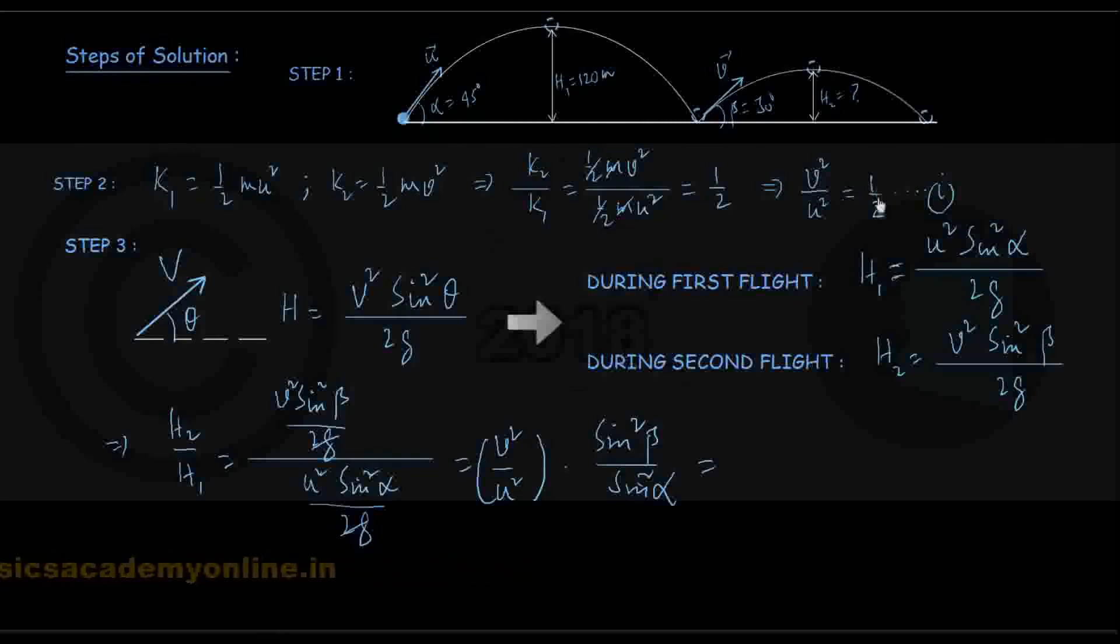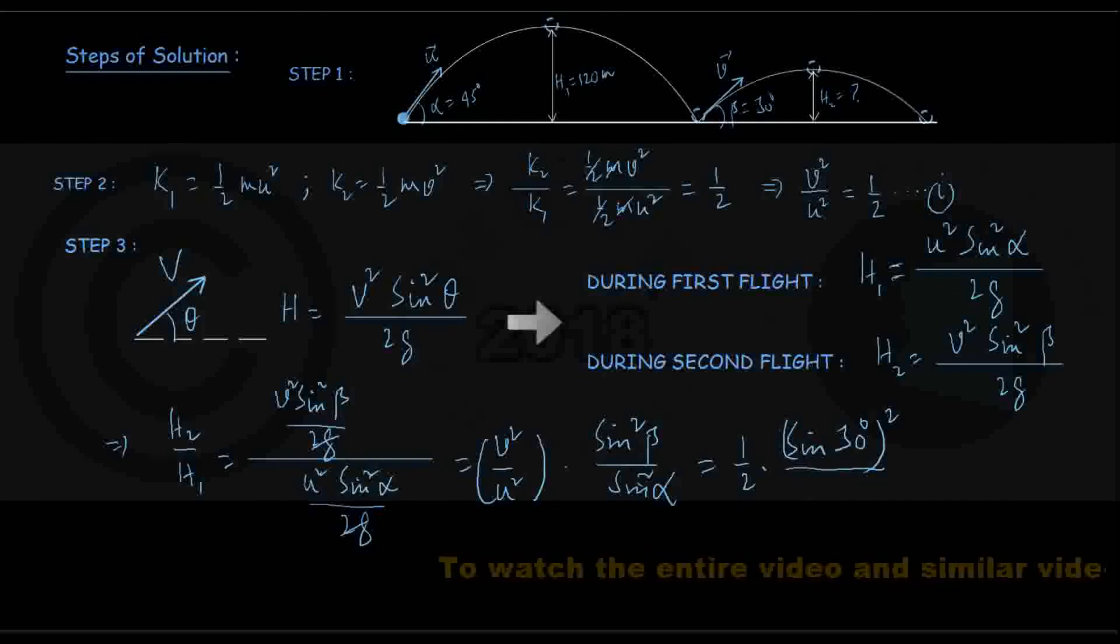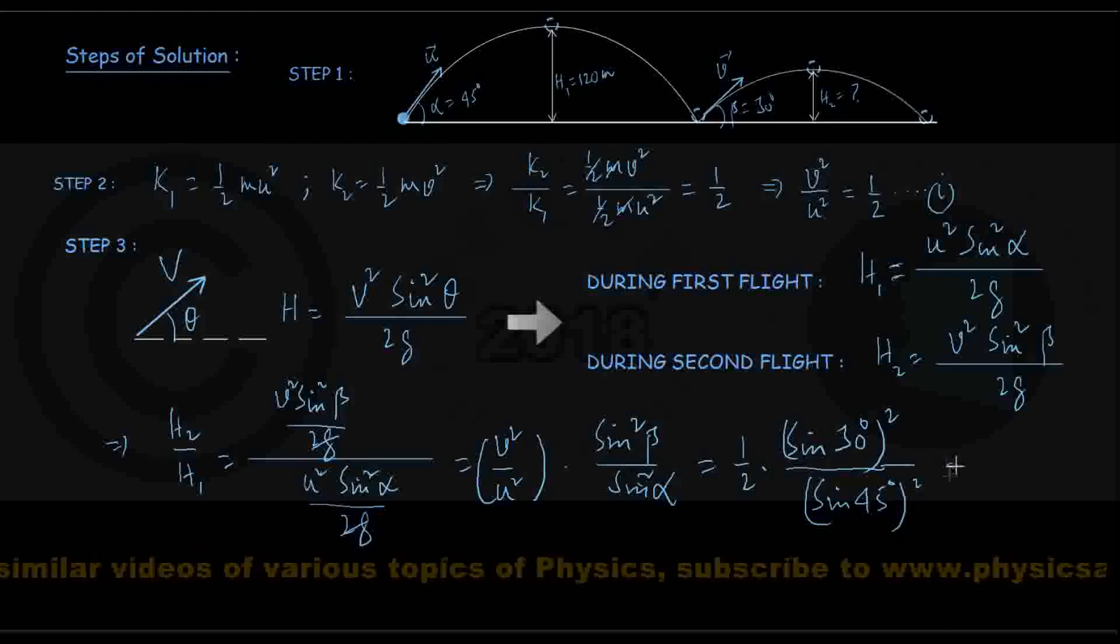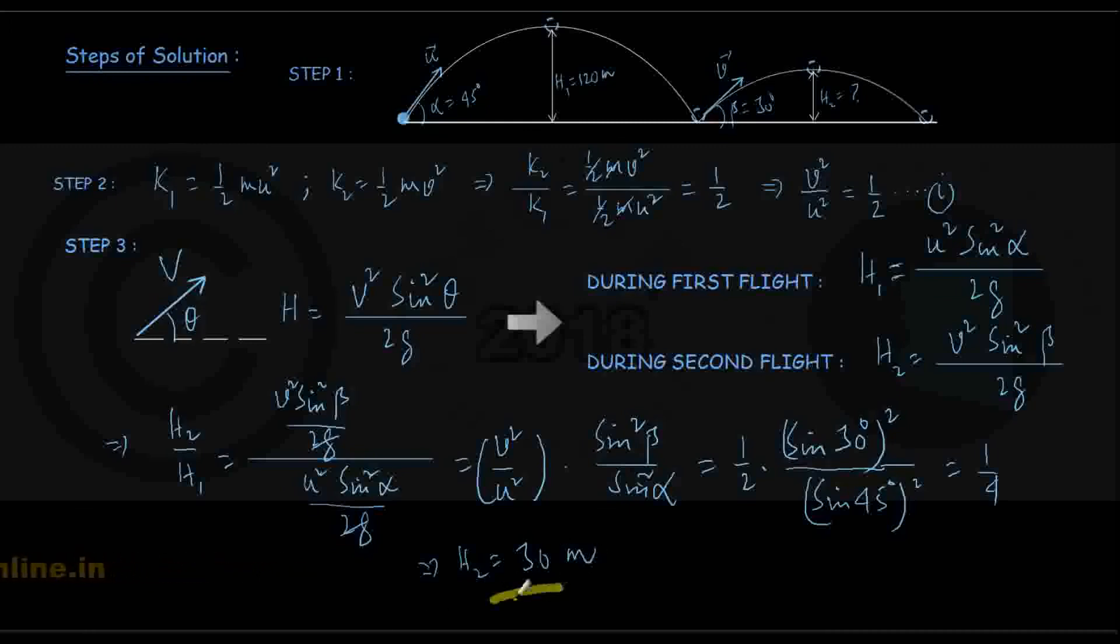v squared by u squared is already found here to be half. So this is half into, beta was 30 degrees so it is sin 30 degrees whole squared. Similarly alpha was 45 degrees, this is sin 45 degrees whole squared. You can show this ratio is coming out to be 1 by 4, and since h1 was known to be 120 meters, it follows easily that h2 is equal to 30 meters. So that's the solution of this question.